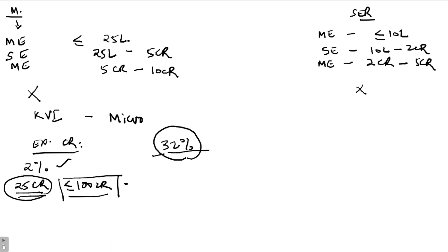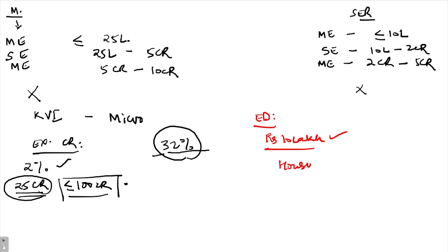The next category is education. Loans to individuals for educational purposes including vocational courses up to rupees 10 lakh are included. This 10 lakh is the limit of the value of the course — the sanction amount does not matter. Anything less than or equal to 10 lakh will be considered.